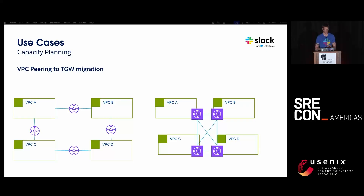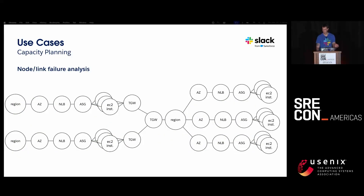Another use case was traffic migration. We migrated from a ring of VPC peering to a TGW mesh. For each intermediate step of that migration process, you might be concerned about dropping traffic or not having valid paths. Because we've transformed this into a graph theory problem, there are many algorithms available to analyze traffic and determine if the feasibility condition can be met. You can take this one step further than migrations — using the graph to do similar analysis where you remove a node, apply the existing flows, and see if the feasibility or ability to meet demand is still possible.